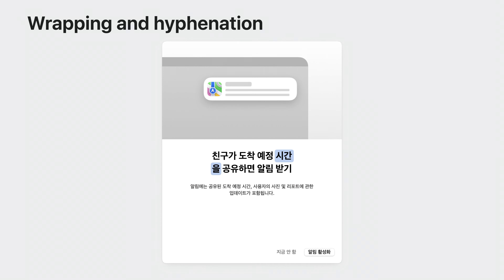macOS Sonoma features several improvements to text layout for non-English languages. An important highlight is changes to wrapping and hyphenation, as some languages require different rules for line breaking depending on the text context. For example, in traditional typesetting for Korean, body text may have a line break in the middle of a word, but title text will only wrap at word boundaries. Breaking within words in titles can feel jarring in Korean. macOS Sonoma will now perform different line breaking depending on the text style font used — in Korean, title and headline text styles will not wrap at word boundaries, while body text style may have a line break within words if appropriate.